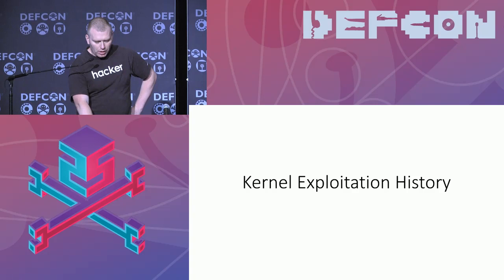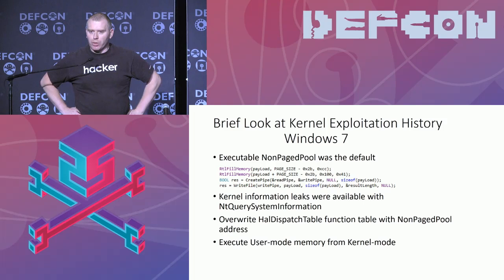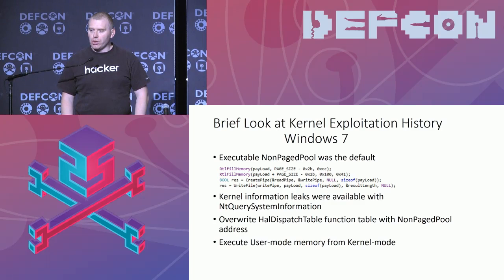Looking at Windows 7, it was actually quite easy back then. You could just allocate code directly to the non-paged pool because it was executable, then use the built-in APIs of the operating system just to return the address of the allocation. Then use the write-what-where to overwrite a function address like in a HAL dispatch table, and then just call that and get your code executed in the kernel. Even easier, you can actually allocate user-mode memory and execute that from the kernel as well.